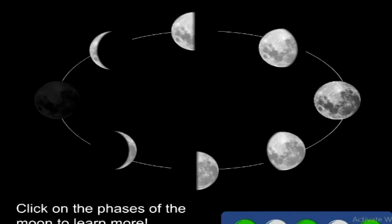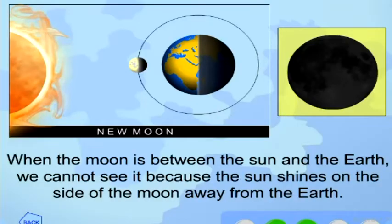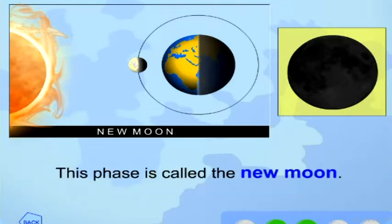Click on the phases of the moon to learn more. When the moon is between the sun and the Earth, we cannot see it because the sun shines on the side of the moon away from the Earth. This phase is called the new moon.